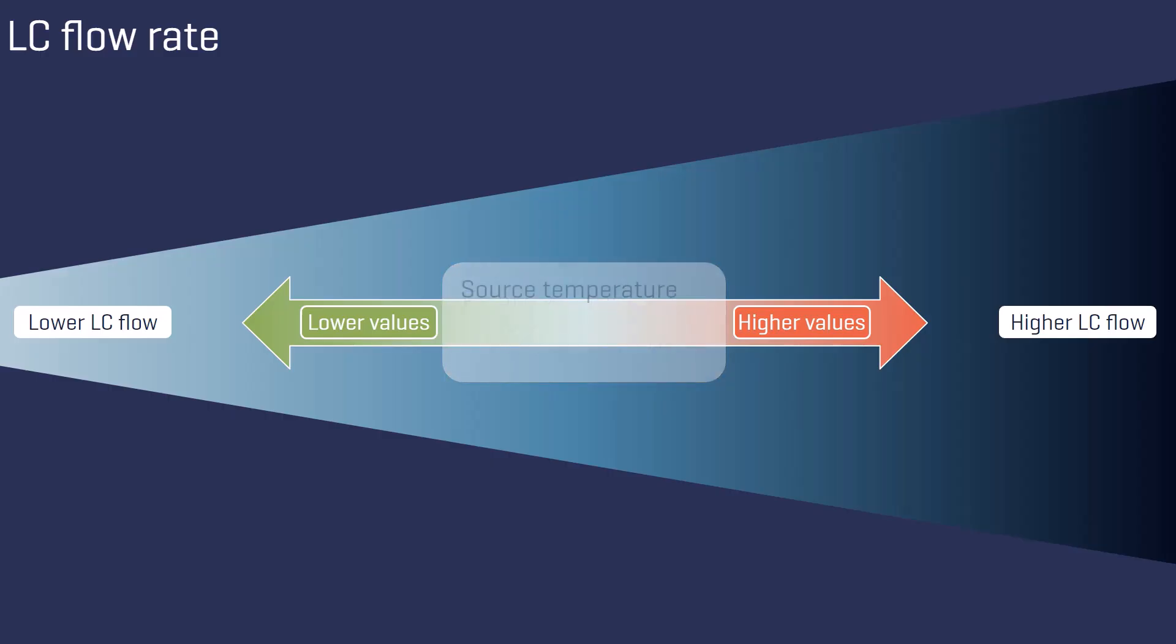Consequently, the optimal values for the source temperature and the ion source gases 1 and 2 tend to be higher at increased flow rates. In addition, the curtain gas pressure must be increased at higher flow rates to effectively prevent larger remaining droplets from entering the mass analyzer.